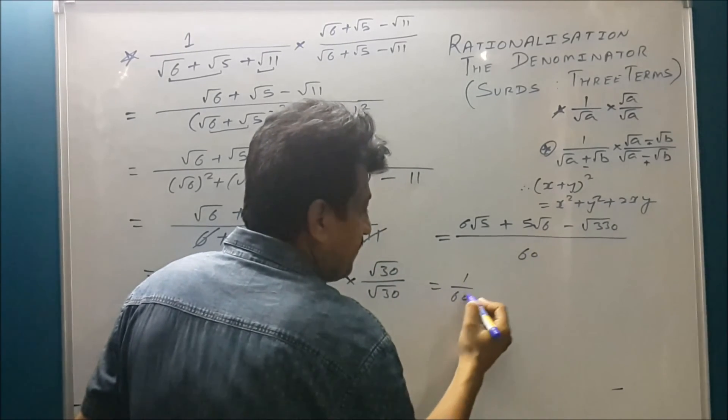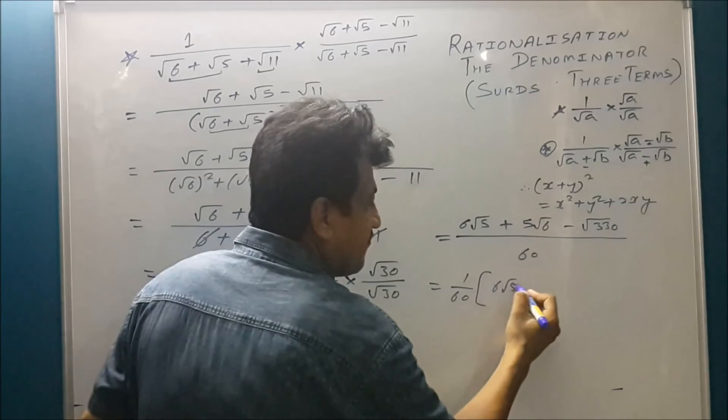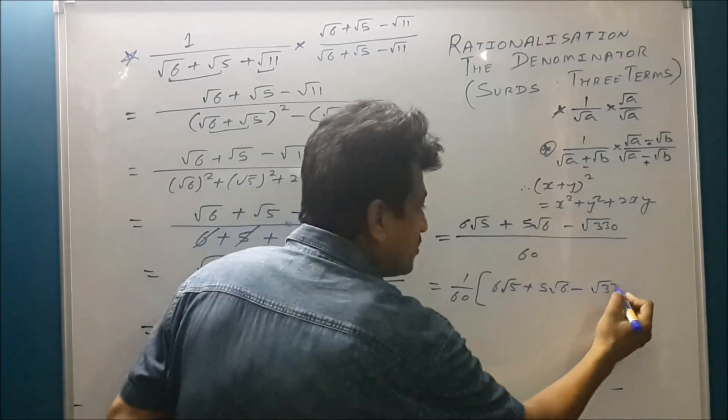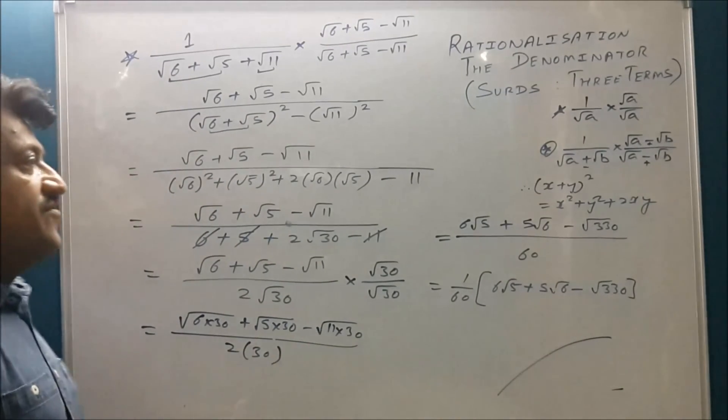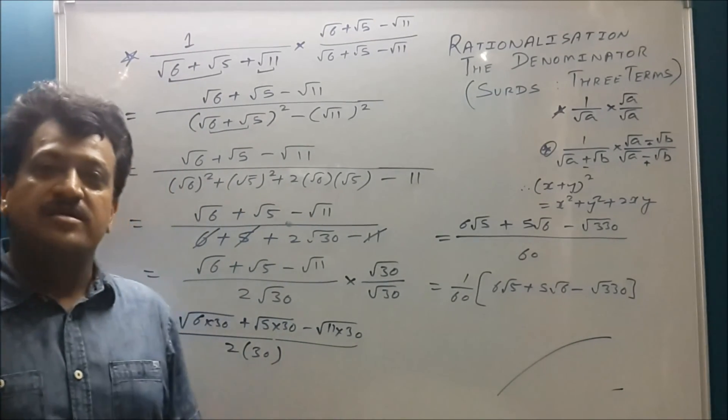So you can write down 1 by 60, 6 root 5 plus 5 root 6 minus root 330. We have done one example of rationalizing the denominator with three terms.